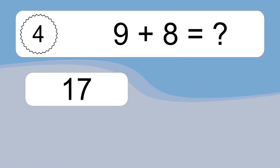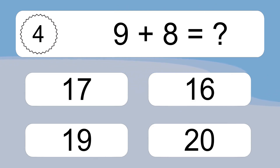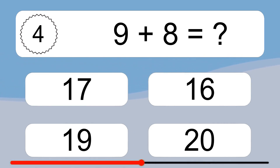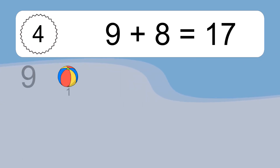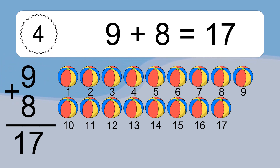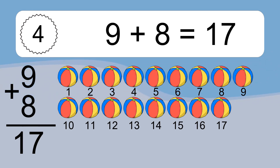9 plus 8 equals what? 9 plus 8 equals 17. Let's count it: 1, 2, 3, 4, 5, 6, 7, 8, 9, 10, 11, 12, 13, 14, 15, 16, 17.